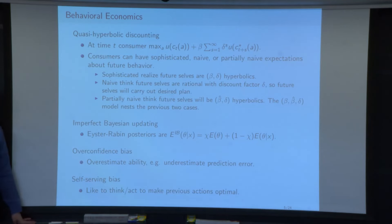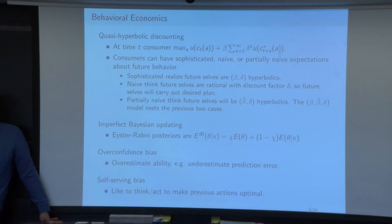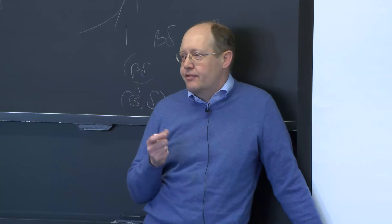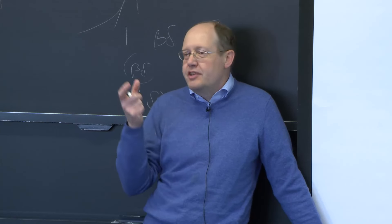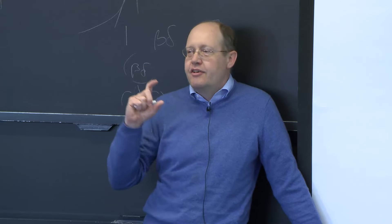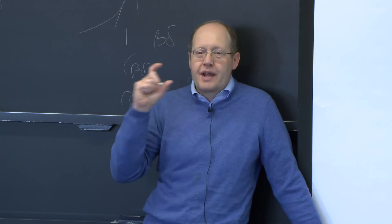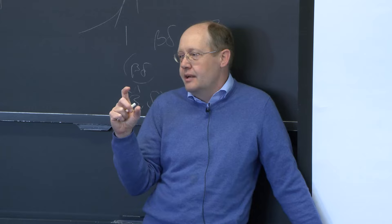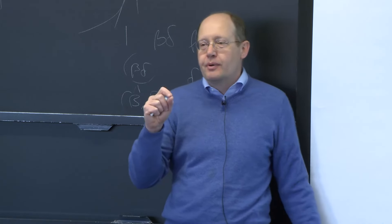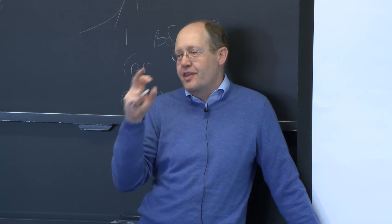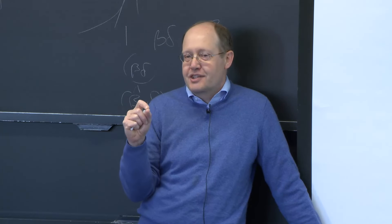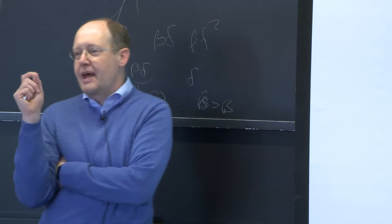Overconfidence bias: people think they're better than they are at many things. A classic example — ask a class how many miles it is from Boston to Buenos Aires, write down a best guess, then write down a 90% confidence interval. Overwhelmingly, if you ask for a 90% confidence interval, only about 50% of the time does the 90% confidence interval contain the correct answer, and the 50% confidence interval contains the correct answer only about 30% of the time. People just think they're better at many things than they are.